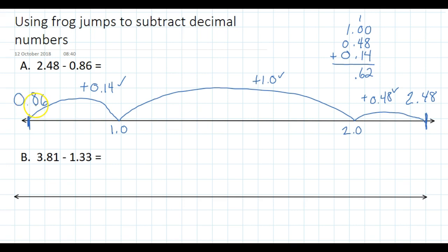I use my number bonds to a hundred. I've got 86 hundredths, so I'm going to the next biggest set of a hundred. What would I add to 86 to get to a hundred? I would add 14, and that takes me to a hundred.